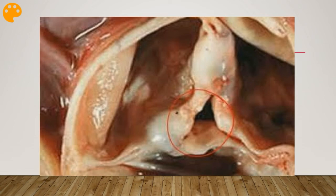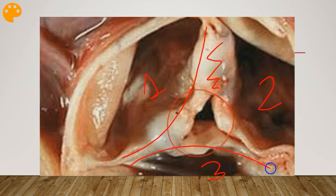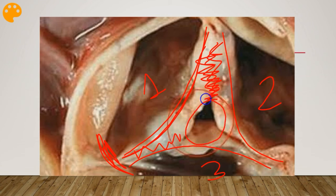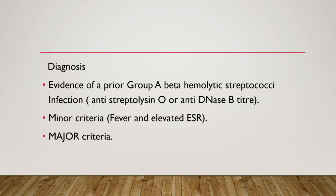The key finding is scarring of the valve with fusion of the commissures. The aortic valve has three cusps, and these are plugged into the aortic root. What happens is that the individual valve commissures become scarred, causing thickening which results in a narrowed opening — this is called the fish mouth appearance of the aortic valve.